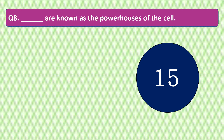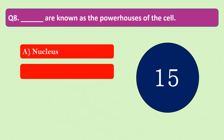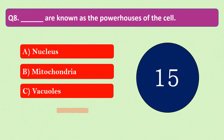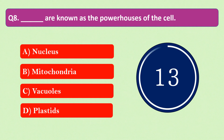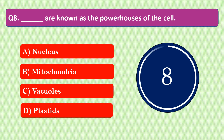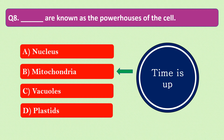Question number 8: Dash are known as the powerhouses of the cell. The options are A. Nucleus, B. Mitochondria, C. Vacuoles, or D. Plastids. Your time starts now. Your time is up and the right answer is option B: Mitochondria. Mitochondria are known as the powerhouses of the cell.